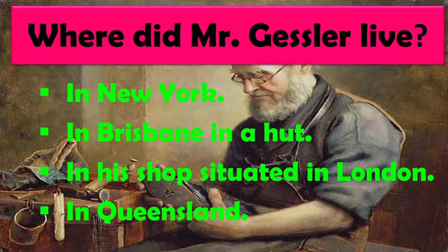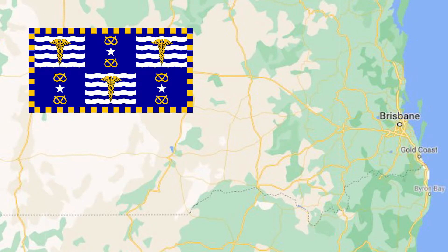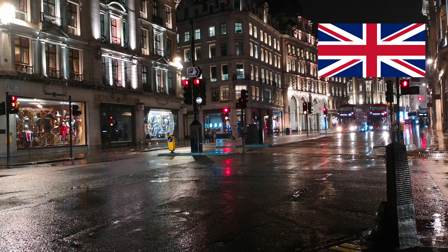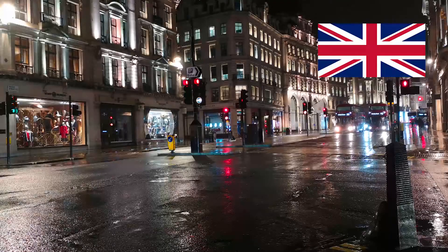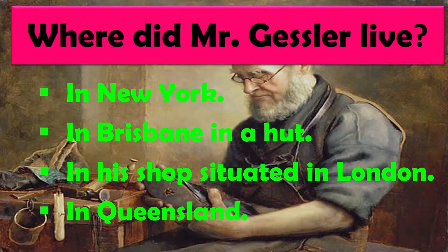Where did Mr. Gessler live? Mr. Gessler kahan rehte the? In New York, in Brisbane, in a hut, in his shop situated in London, or in Queensland. The right answer is in his shop situated in London.